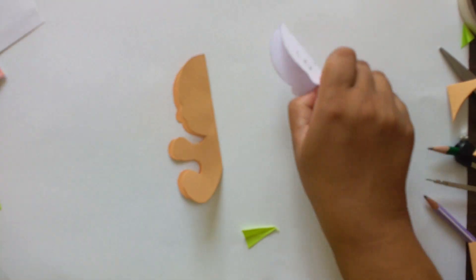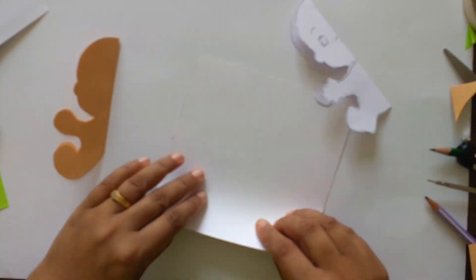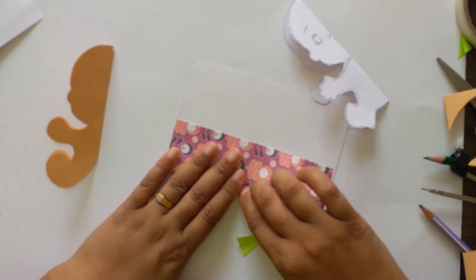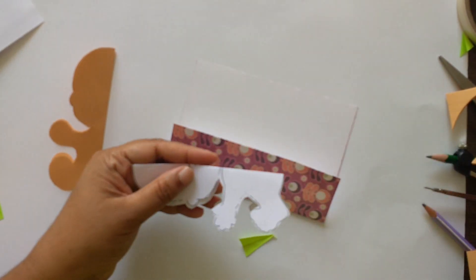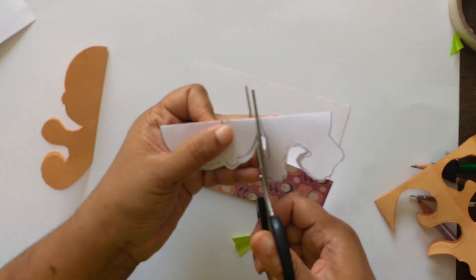After tracing, cut the paper like this. So fold it in half and take only this part.